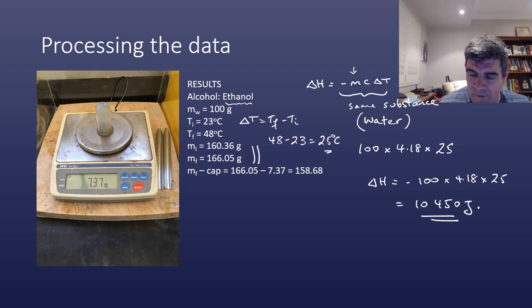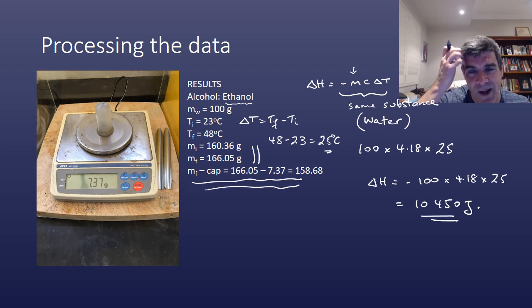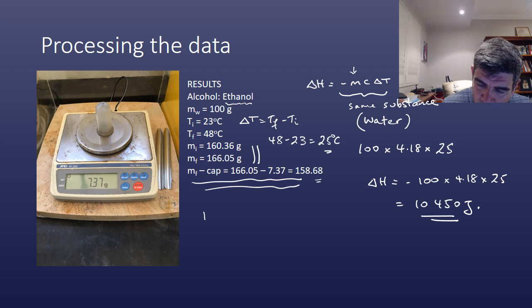None of that information so far has used any of the information that we collected. Now, those of you who were watching very closely will have noticed that when I measured the mass initially, the cap was not on the spirit burner. But when I measured it finally, it was. And as a consequence, the weight was higher. And obviously, we can't do anything with a weight that is higher. So what I did was, I then went and measured the mass of the cap. You can actually see where I've done that. There's the value. And so I subtract that. And so this gives me a final mass of 158.68. So the 10,450 joules is equivalent to 160.36 minus 158.68, which is equivalent to 1.68 grams. And this is ethanol.